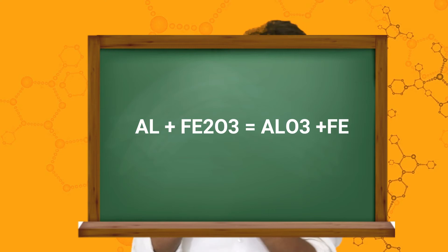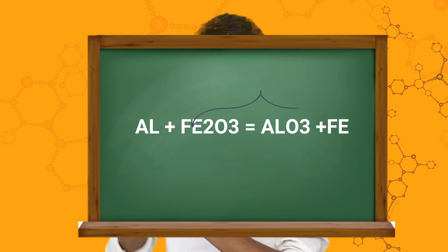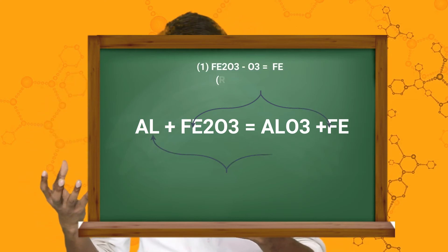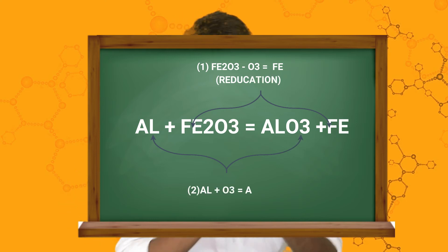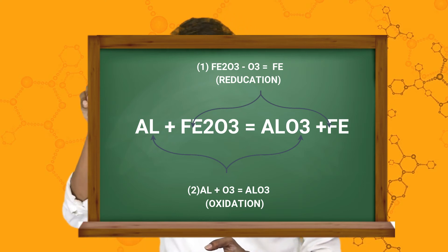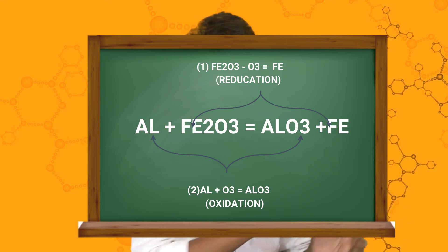Let's understand redox with an example: Al plus Fe2O3. After the reaction, the products are Al2O3 plus Fe. Here, oxygen from Fe2O3 is lost — so Fe2O3 undergoes reduction. And Al gains oxygen to form Al2O3 — so Al undergoes oxidation. Similarly for hydrogen examples: where hydrogen is added, that is reduction; and where hydrogen is lost, that is oxidation.